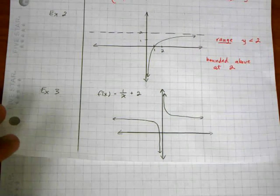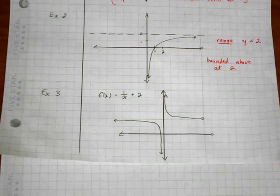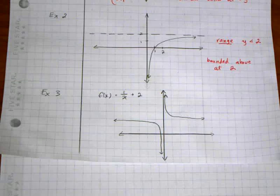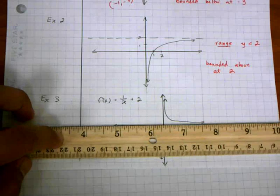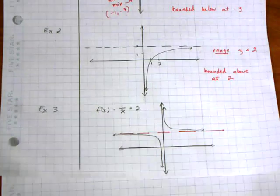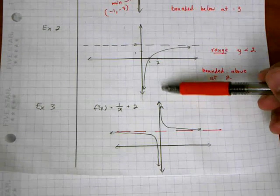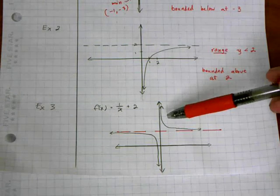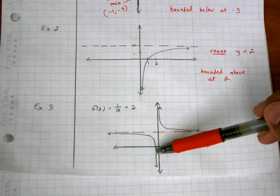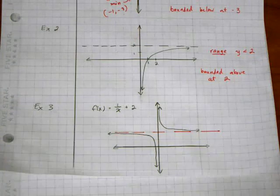Here is another example where I've given the equation: f of x equals 1 over x plus 2. From the graph you can see it has horizontal asymptotes. Looking at the top part, it extends on forever, so it's not bounded from above. Looking at the lower part of the curve, it also extends down forever, so it's not bounded from below. Considering the entire function, it's not bounded at all. However, this looks like an infinite discontinuity, so we can look at it as two different parts.